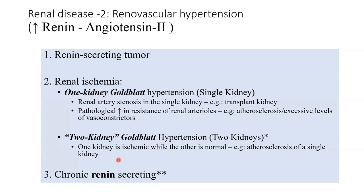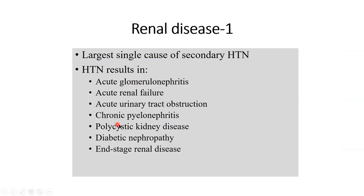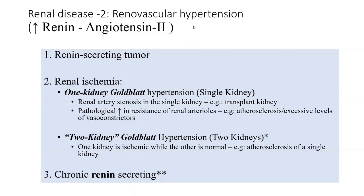These are kidney diseases causing hypertension — each one has its own story. However, the mainstay of Guyton and other textbooks is renal vascular hypertension. While we can discuss acute renal failure shutdown and how it causes fluid retention leading to hypertension, this slide is specifically about renal vascular hypertension.